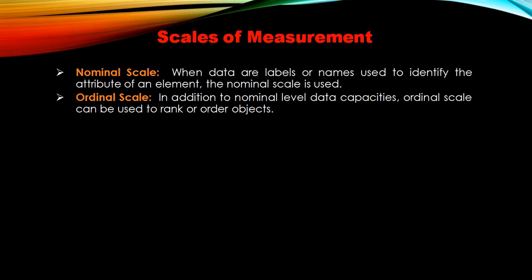Ordinal scale talks about ranking. For example, if I say India is at the top of world test rankings in cricket, that simply means it's at the top — it's the order, it's the rank. Whenever a customer ranks the preferences of products, that again holds no great statistical importance or significance. What it tells you is just the ranking. Ordinal scale is just used to rank or order the objects — you have to remember that.